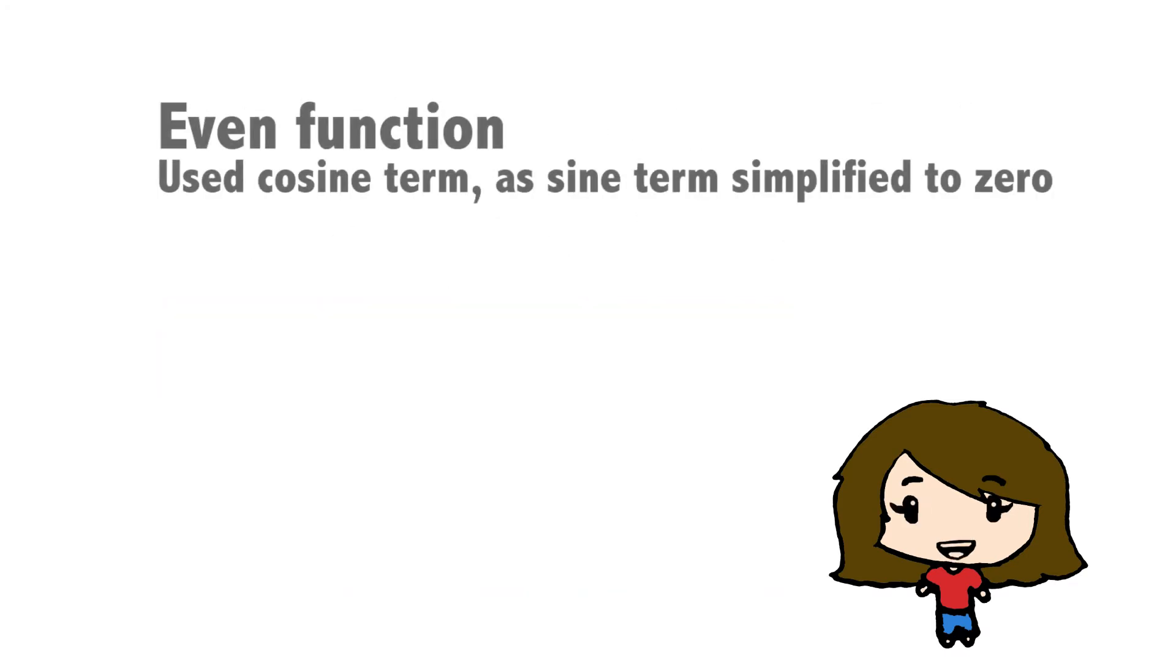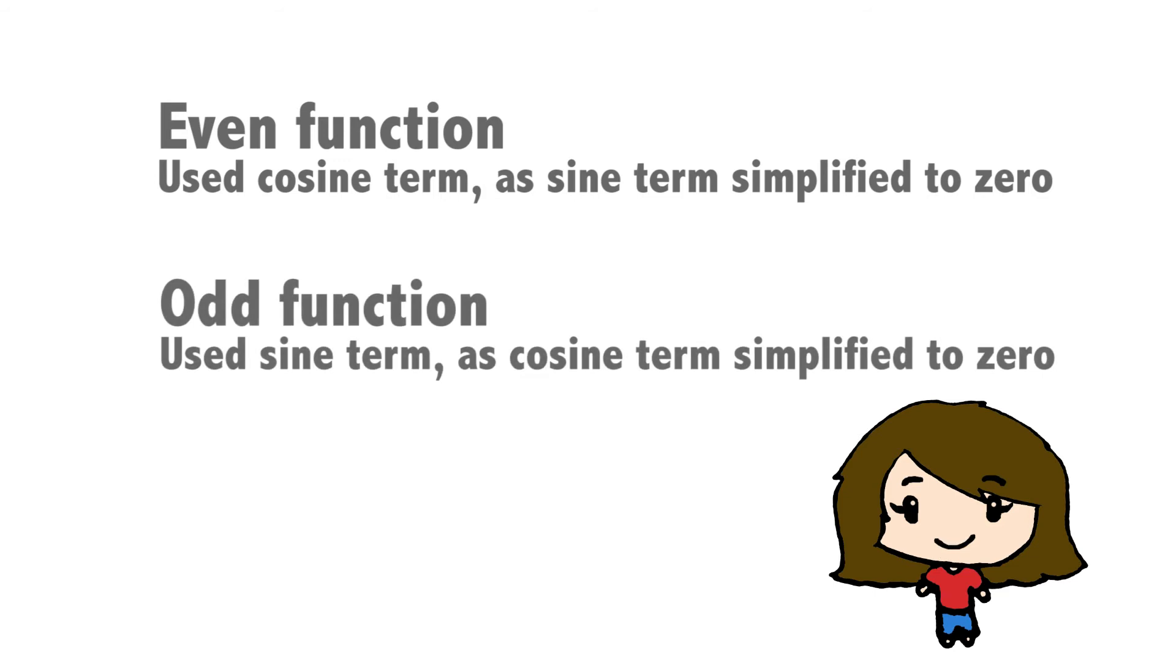For modeling an even function, we will use the cosine terms, and the sine term will be simplified to 0. Similarly to model an odd function, we will use the sine terms.